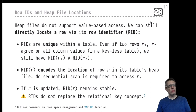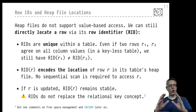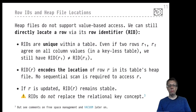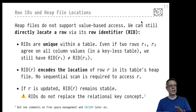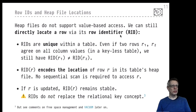A heap file is a simple structure and doesn't provide any value-based access — we cannot use row values to navigate inside the file and pick out particular rows. But that doesn't mean we have no orientation at all. Once we've navigated to a particular row, we have a means to refer to it later: the so-called row identifier, or RID. Each row in a heap file is equipped with its RID, which we can use to directly locate that specific row.